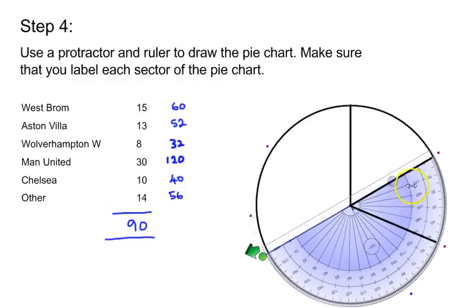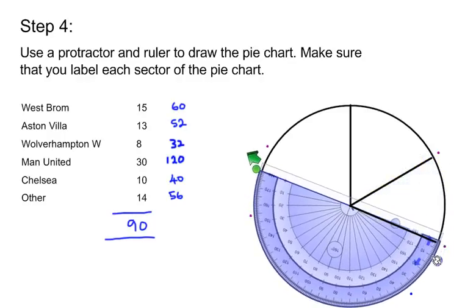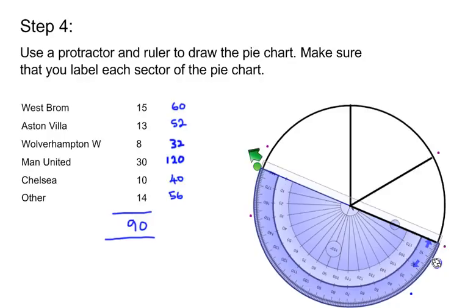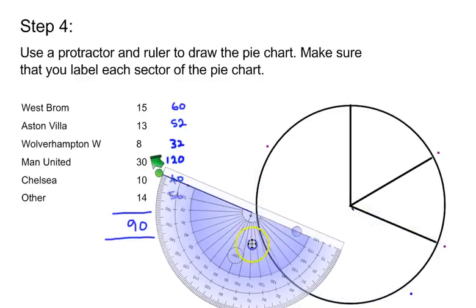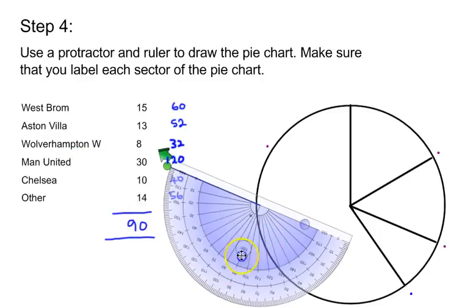I'm going to rotate so the zero line is against what I've just drawn, and now I'm marking off where 32 degrees is. Same as before, draw a straight line from the center of the circle to the point where 32 degrees is. Hopefully you get the feel for what's going on here.